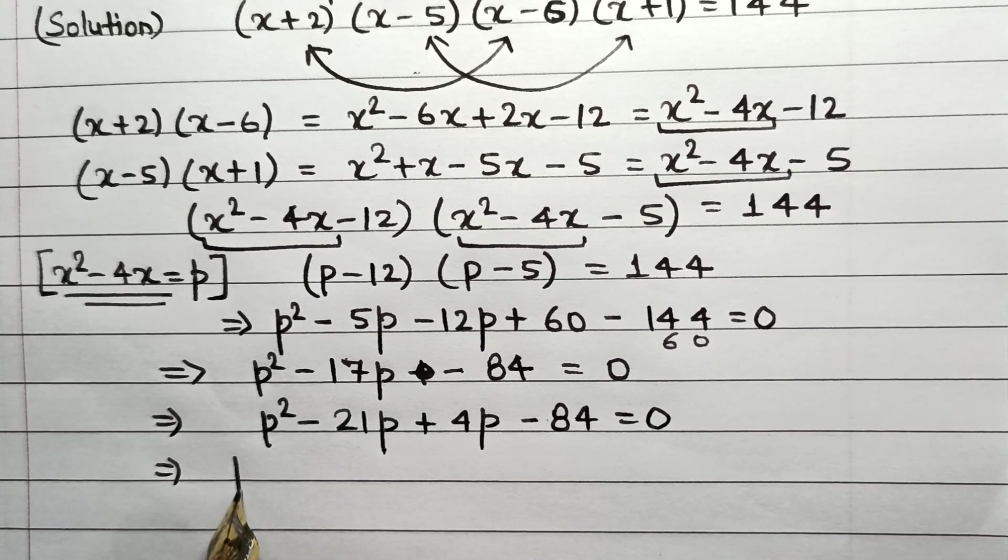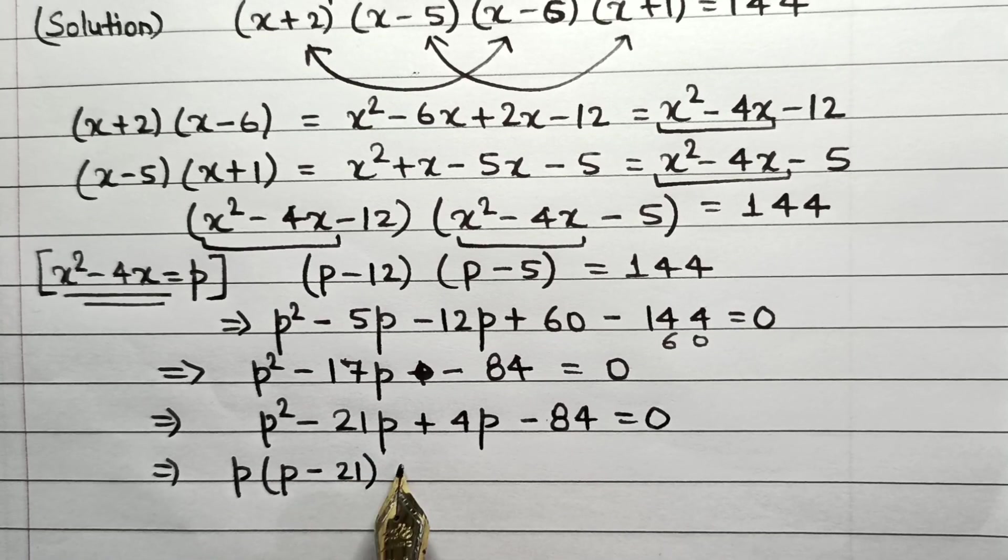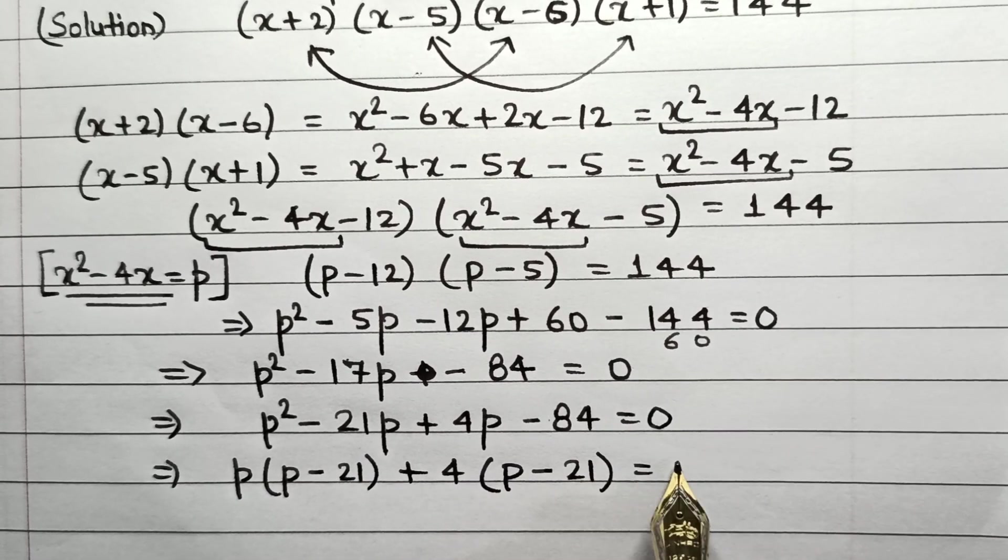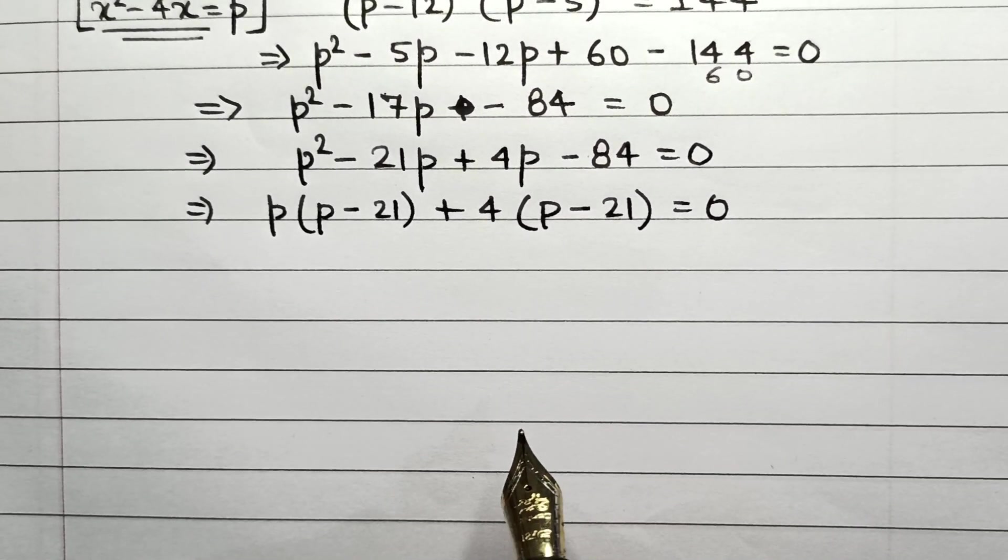So this implies that p taken as common: p(p - 21) + 4(p - 21) = 0. Now let us solve this further.